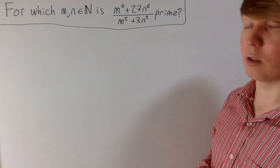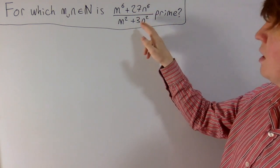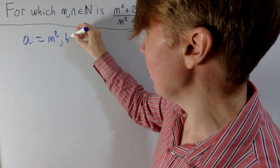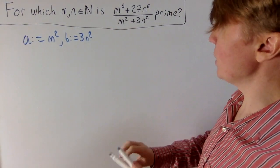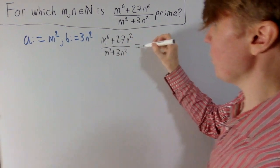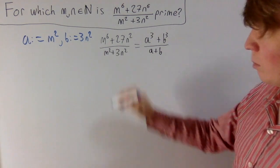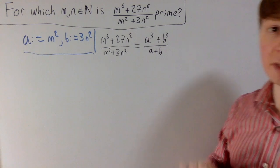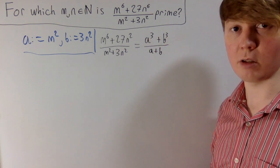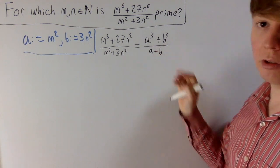To start tidying up the fraction, you might spot that m⁶ is (m²)³ and 27m⁶ is (3m²)³. So if we introduce a = m² and b = 3n², then our original expression m⁶ + 27n⁶ all divided by m² + 3n² becomes the really nice a³ + b³ all divided by a + b. At this point you can see that (a + b) is going to be a factor of this cubic, because if you substitute a = −b, then a³ + b³ equals 0, so by the factor theorem, (a + b) is a factor. This is particularly nice because we can do this division with no nasty remainder.